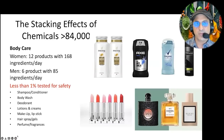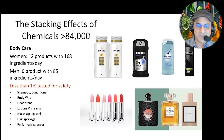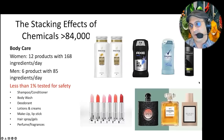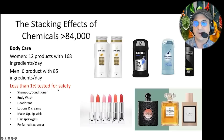Going back to the stacking effect of chemicals: right now there are about 84,000 chemicals being used on a daily basis in products. The sad thing is that out of those, only 1% has ever been tested for safety. Women on average use 12 products a day on their body — shampoo, conditioner, deodorants, perfumes, makeup — and men use six on average. Women are getting exposed to 168 different chemicals a day and men about 85 different chemicals a day, which most likely have not been tested for any kind of safety.